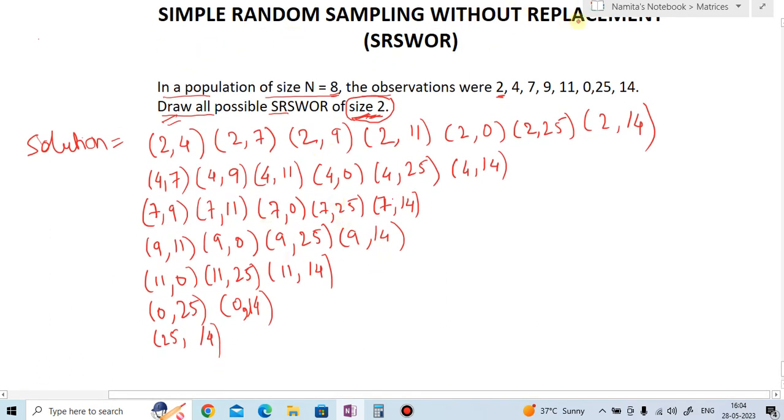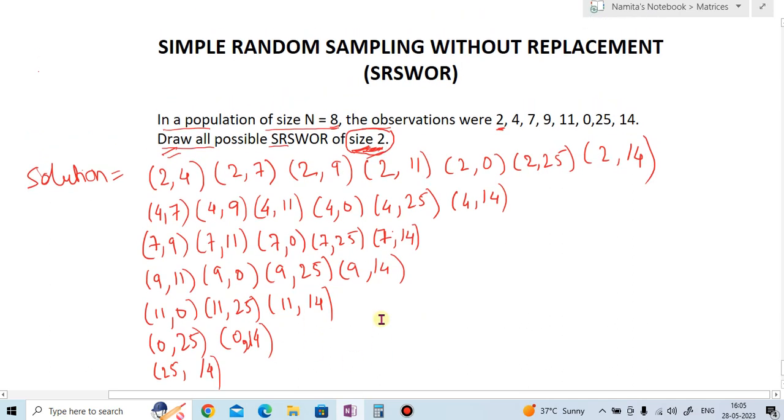We have drawn all the possible simple random sampling without replacement for size 2. In this way you have to draw the simple random sampling without replacement for size 2. I hope you have understood today's example.